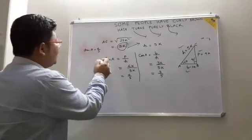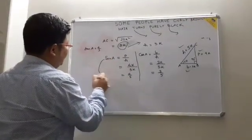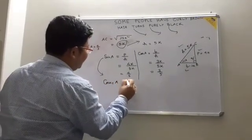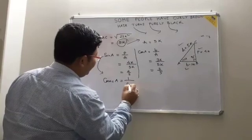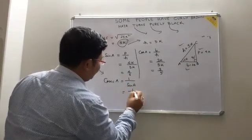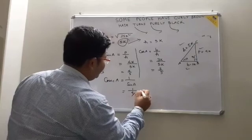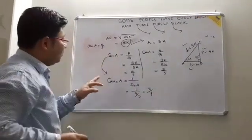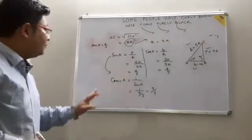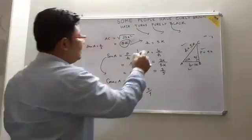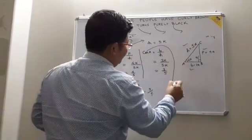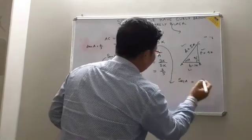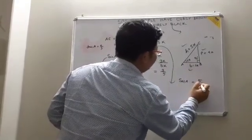Now we find cosec A. Cosec A equals the reciprocal of sin A, so it equals 1 divided by (4/5), which gives 5 by 4. We had sin A as 4 by 5, so cosec A equals 5 by 4. And similarly for sec A — it is the reciprocal of cos A, so sec A equals 5 by 3.